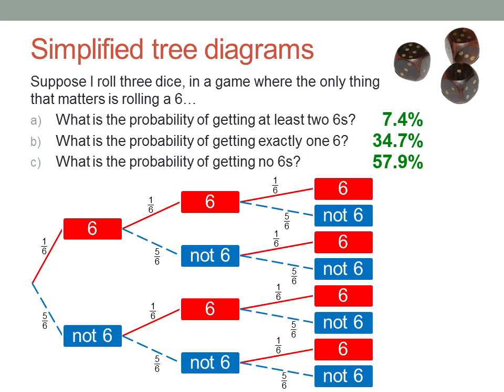Now imagine how hard it would be to work these out by drawing a complete tree diagram, with all two hundred and sixteen outcomes at the right-hand side.